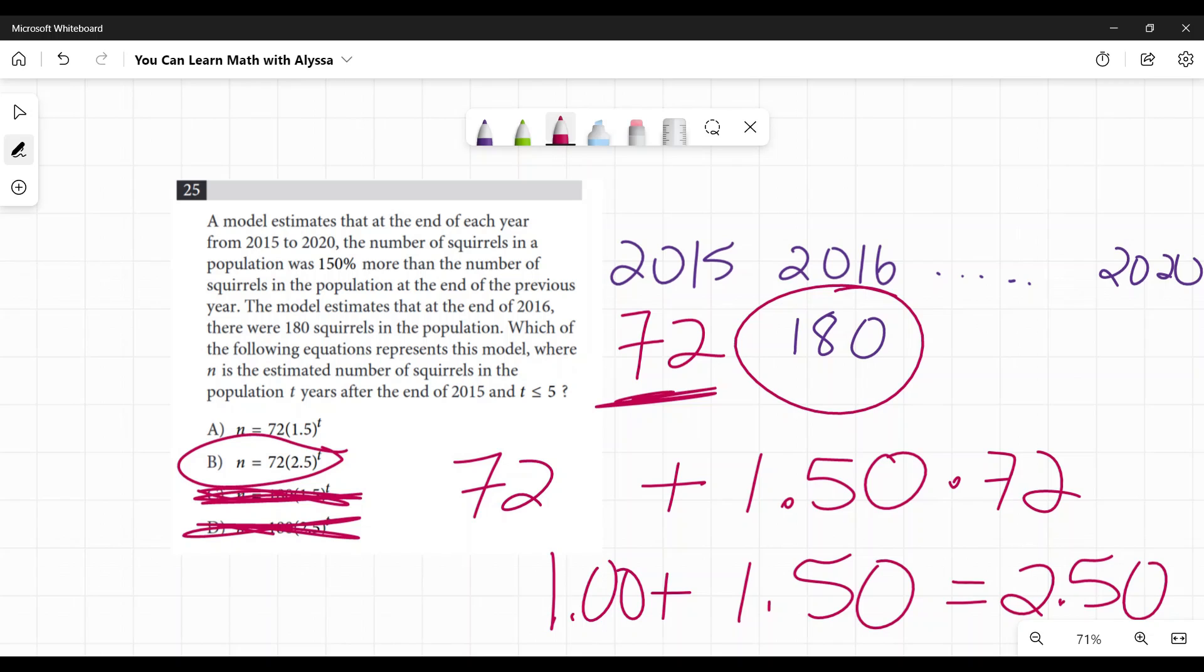Again, that can be confusing and it can be easy to get tripped up. That's why I say here, just once you figure out that 72 is a starting and just go, okay, what do I have to multiply to get to 180 is a really quick, simple way using your calculator to confirm it's 2.5. That's my answer and move on.